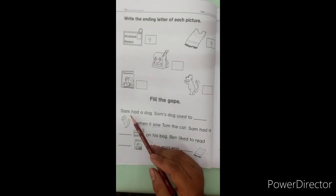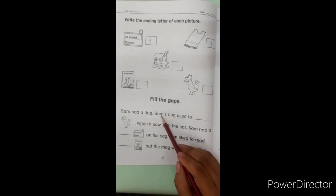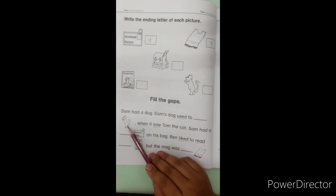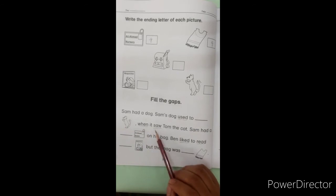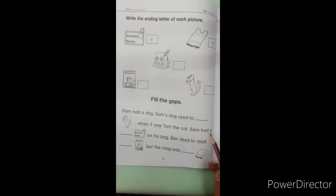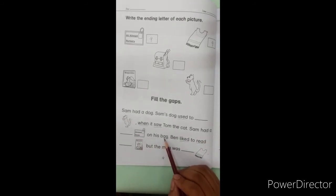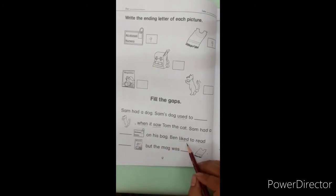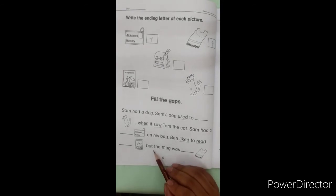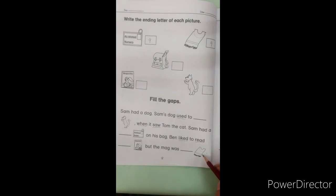Sam had a dog. Sam's dog used to wag when it saw Tom the cat. Sam had a tag on his bag. Ben liked to read mag. But the mag was rag. Read it again.